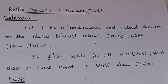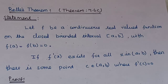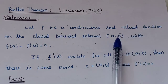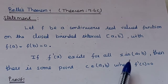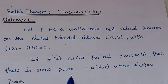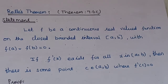Let f be a continuous real-valued function on the closed bounded interval [a, b], with f(a) equal to f(b) equal to 0. The first condition is a continuous function on the closed bounded interval with the interval endpoints' function value 0. If f'(x) exists for all x in the open interval (a, b), then there is some point c belonging to open interval (a, b) where f'(c) equal to 0.